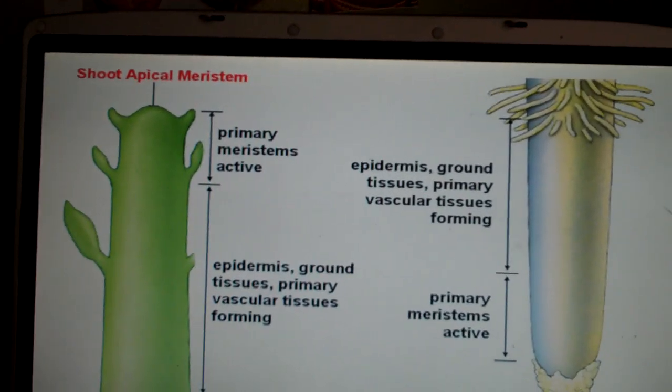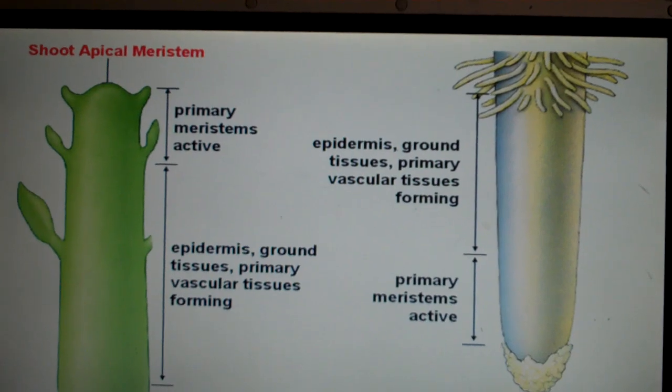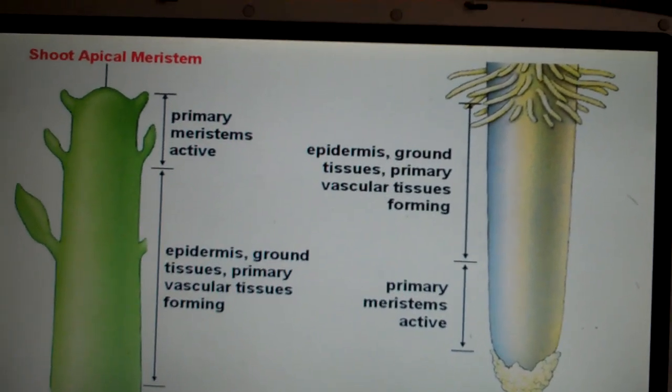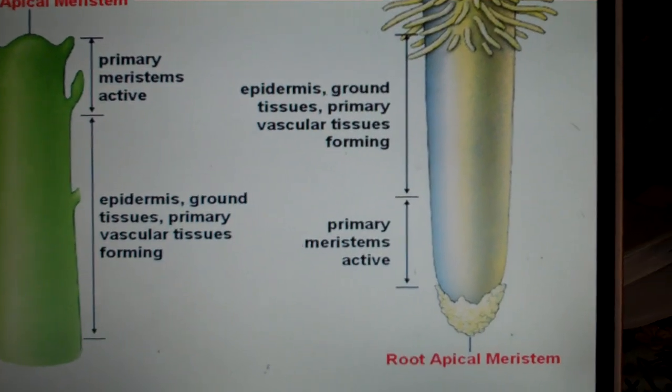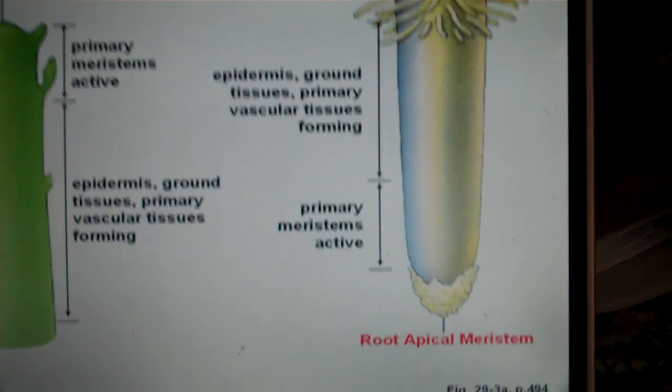Now, a plant will increase in its primary growth, which means it will grow taller if it's a shoot system or the roots will extend more into the soil if it is the shoot system.